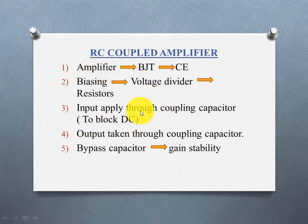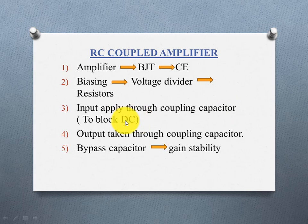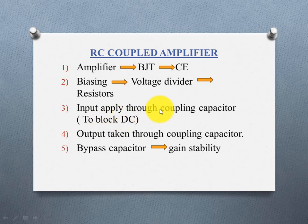The third point: you apply the input through a capacitor. A capacitor's basic function is to block DC and pass AC. So the input is applied through a coupling capacitor, and it is connected to the base terminal.